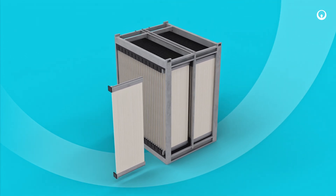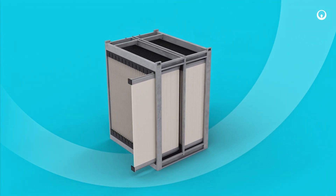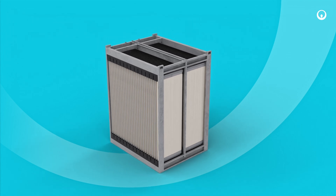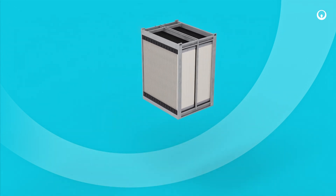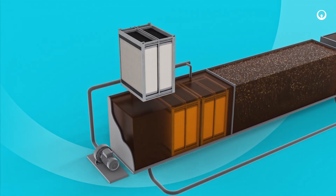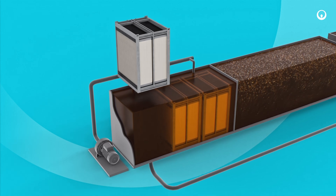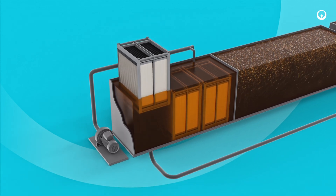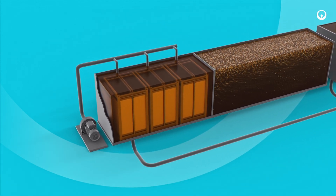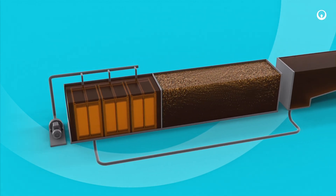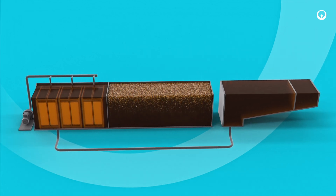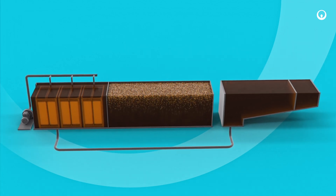Integral cassette mixing with air provides substrate renewal and biofilm control. Cassettes are immersed directly into the anoxic zone of the bioreactor tank. ZLUNG cassettes are modular, easy to install, and can be deployed as needed with no interruption to the existing plant operations.